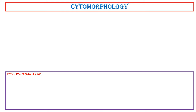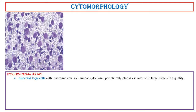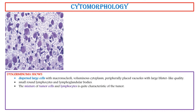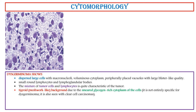Cytomorphology. This germinoma shows dispersed large cells with macronucleoli, voluminous cytoplasm, peripherally placed vacuoles with large blister-like qualities, small round lymphocytes, and lymphoglandular bodies. The mixture of tumor cells and lymphocytes is quite characteristic of the tumor. A tigroid meshwork-like background is due to the smeared glycogen-rich cytoplasm of the cells, though it is not entirely specific for this germinoma.